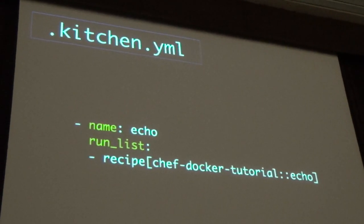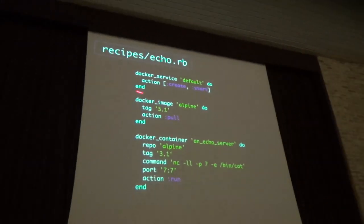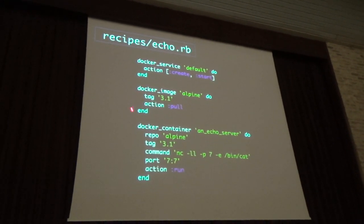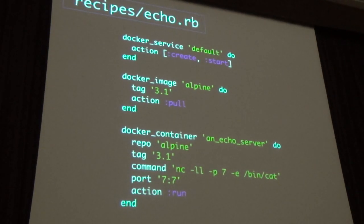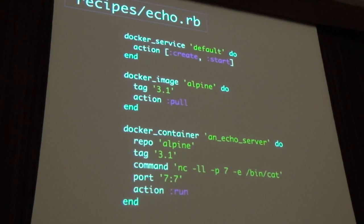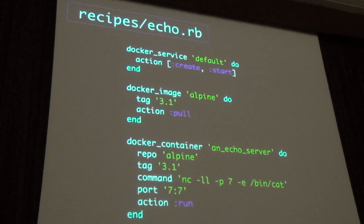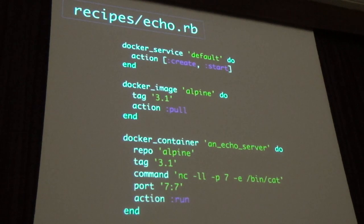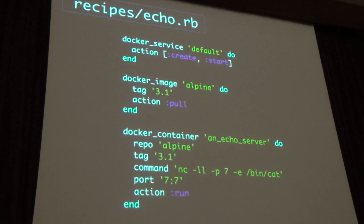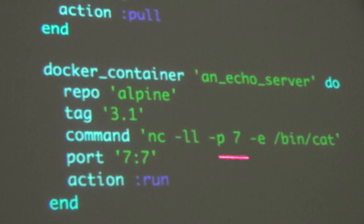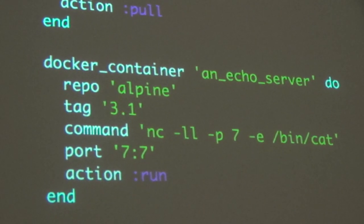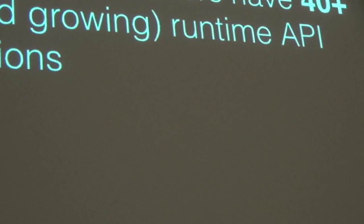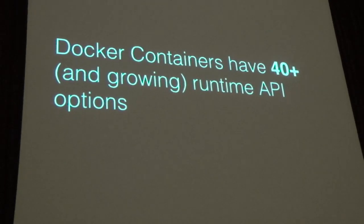If you're following along in the git repo, check out tag 020 and you'll see the echo recipe. You write the recipe — docker_image 'alpine' pulling a specific tag, then the docker_container resource. When using the docker_container resource you're always naming the container. On the command line docker run will auto-generate a goofy name, but using Chef, Puppet, or Ansible docker modules you need to have a name the entire time so it has something to reference, look at, test, and repair.